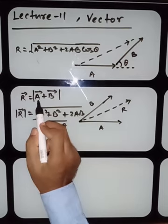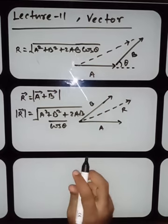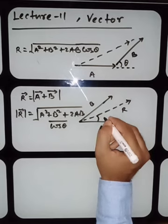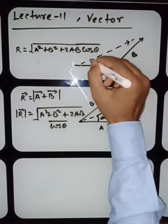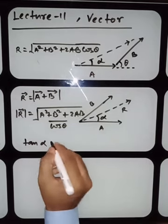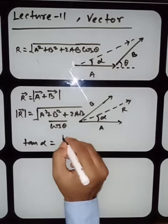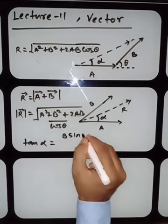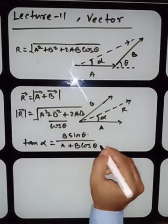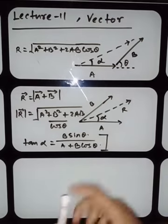We also studied the direction of the resultant. The angle alpha that the resultant makes is given by: tan α = (b sinθ) / (a + b cosθ). This is the direction of the resultant.